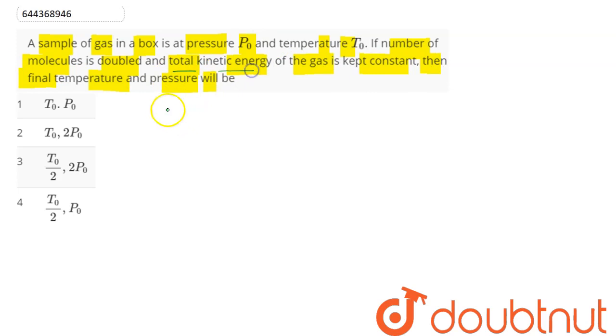Average kinetic energy for f degrees of freedom of a gas is given as (f/2)kT. This is for one molecule. Hence, for N molecules, this is NkT. Now, the kinetic